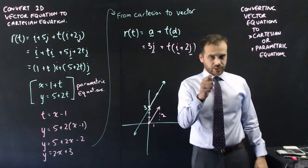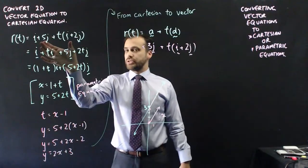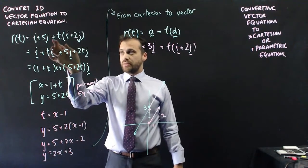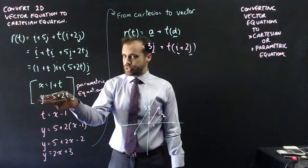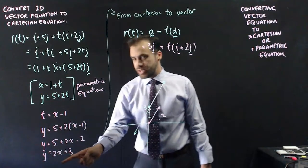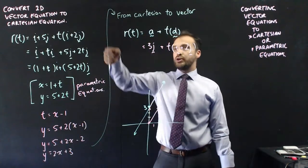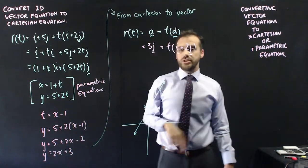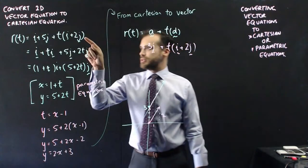And it's at this point that alarm bells should be going off in your head, because I started with a vector equation that looked like this, i plus 5j plus t(i plus 2j). I converted it to a parametric set of equations, then I converted it to a Cartesian equation, which was y equals 2x plus 3, and then I took y equals 2x plus 3 and converted it back to a vector equation, and I get this, which is different to that.